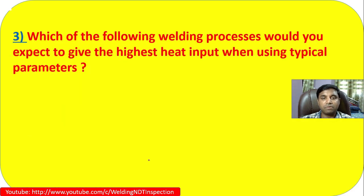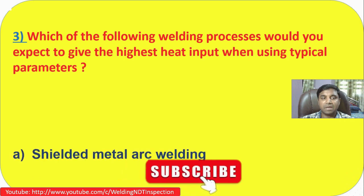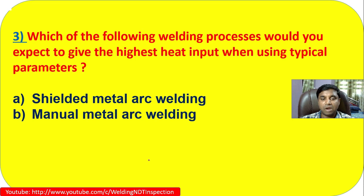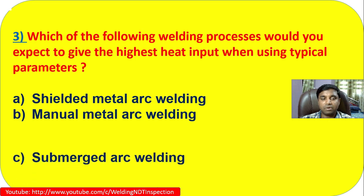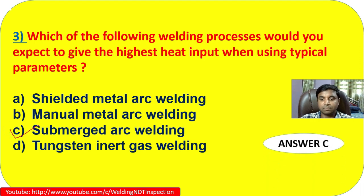Question 3: Which of the following welding processes would you expect to give the highest heat input when using typical parameters? Options are: A) shield metal arc welding, B) manual metal arc welding, C) submerged arc welding, and D) tungsten inert gas welding. Definitely submerged arc welding gives the highest heat input. The answer is C.